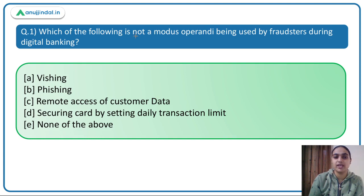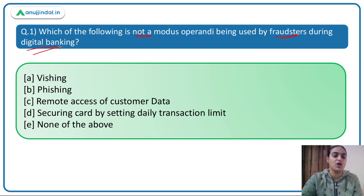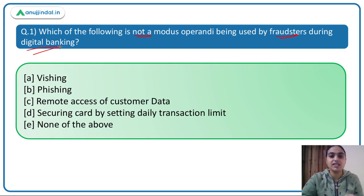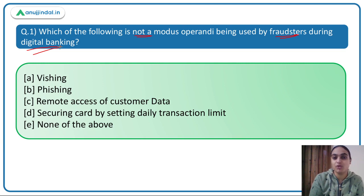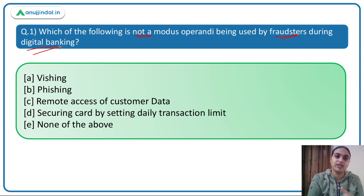The first question asks: which of the following is NOT a modus operandi used by fraudsters during digital banking? The pace of digital banking has increased significantly — more people are using digital platforms for payments and transfers rather than visiting banks or using cash.